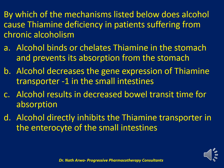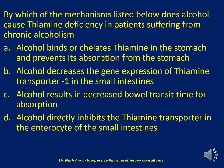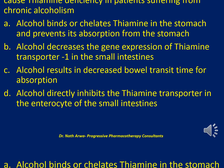The next question reads: By which of the mechanisms listed below does alcohol cause thiamine deficiency in patients suffering from chronic alcoholism? Is it that alcohol binds or chelates thiamine in the stomach? Is it that alcohol decreases the gene expression of thiamine transporter 1 in the small intestines? Is it that alcohol results in decreased bowel transit time? Or is it that alcohol directly inhibits thiamine transport in enterocytes? The correct answer is B — alcohol decreases the gene expression of thiamine transporter 1 in the small intestines.